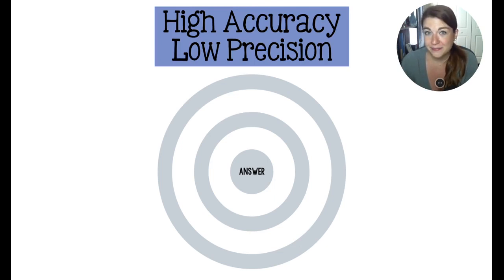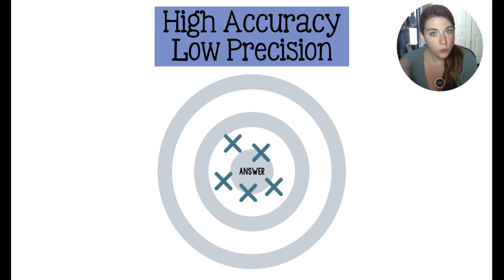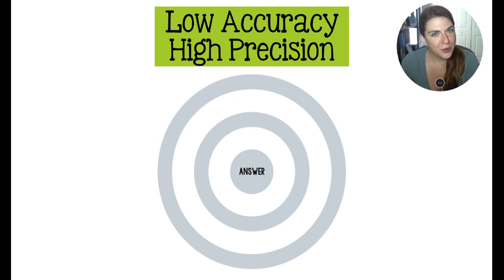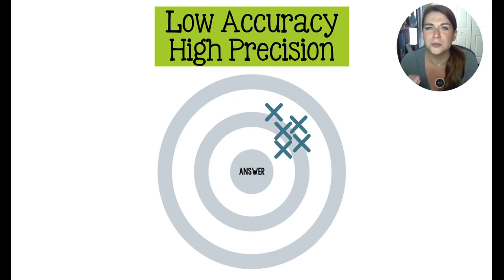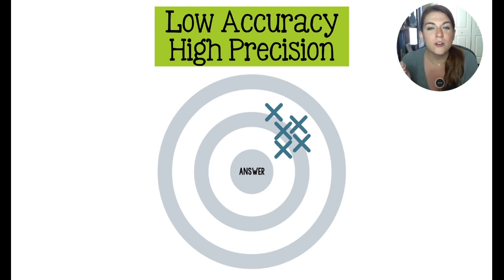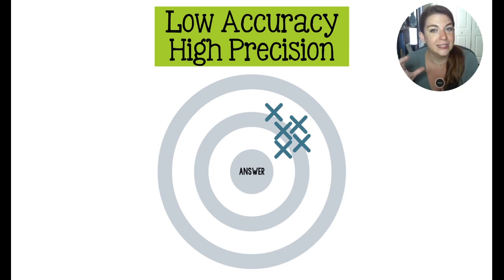High accuracy and low precision would have all of your answers pretty close to the correct answer, but not close to each other — they're kind of spread out. Low accuracy and high precision means your answers are really close together, but not close to the target. This is maybe the toughest one to overcome, because you are following the directions super well, but the directions are not pointing you towards the correct answer — so you have to go back and rewrite your entire experimental procedure.